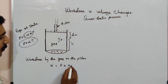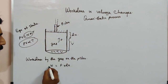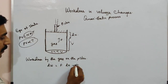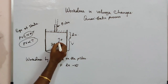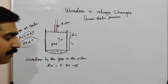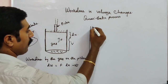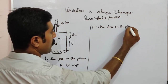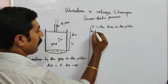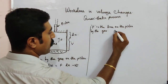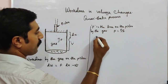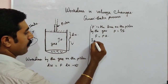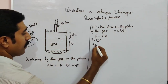Work done by the gas on the piston — what is the formula? Work done equals force into distance. Here, the change in distance is dx. So dW is equal to F into dx, where F is the force acting on the piston by the gas. We know that pressure equals force divided by area, so force equals pressure times area.